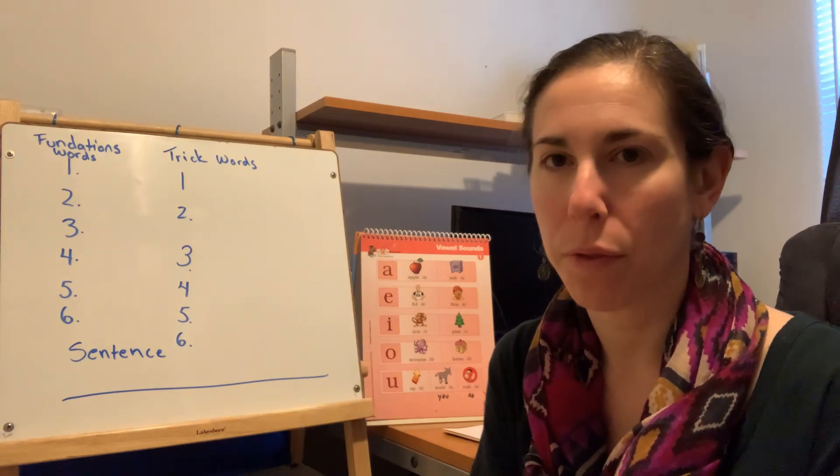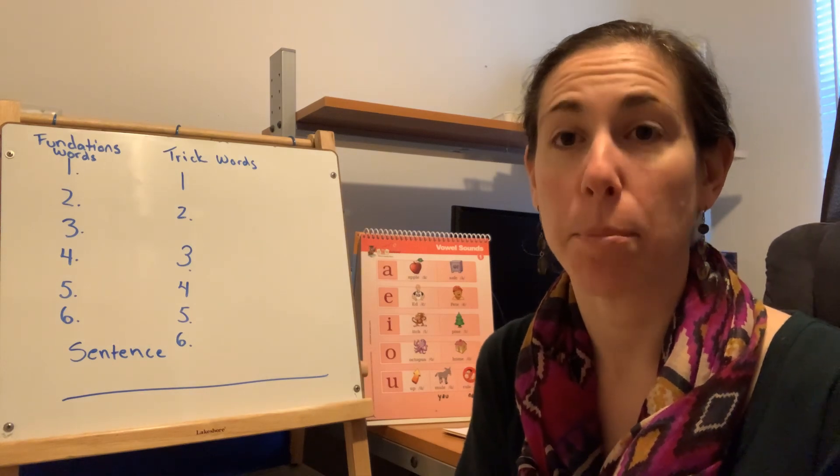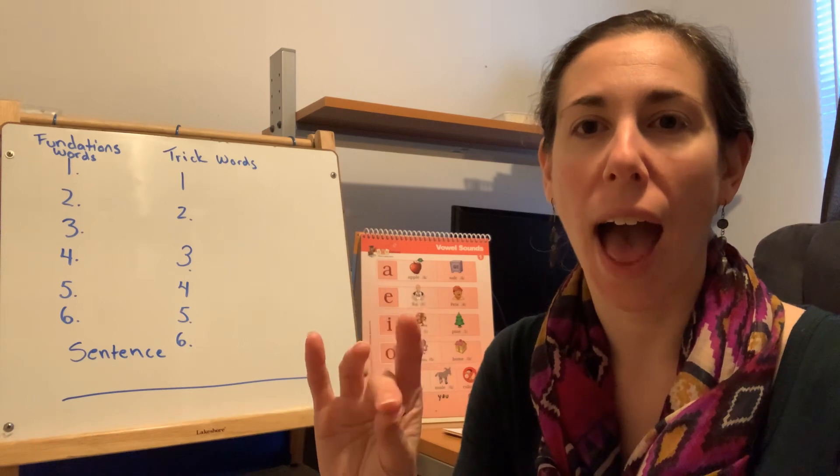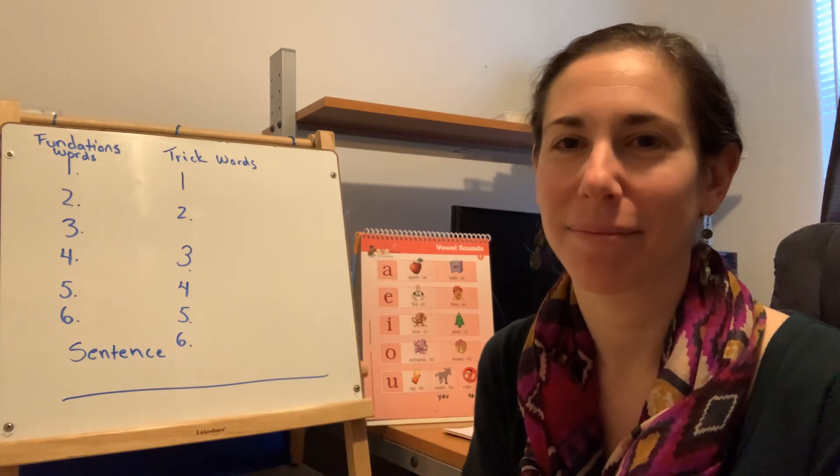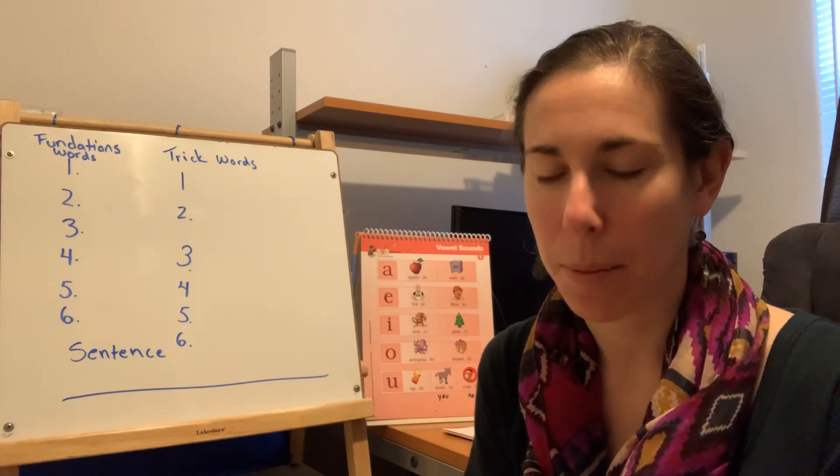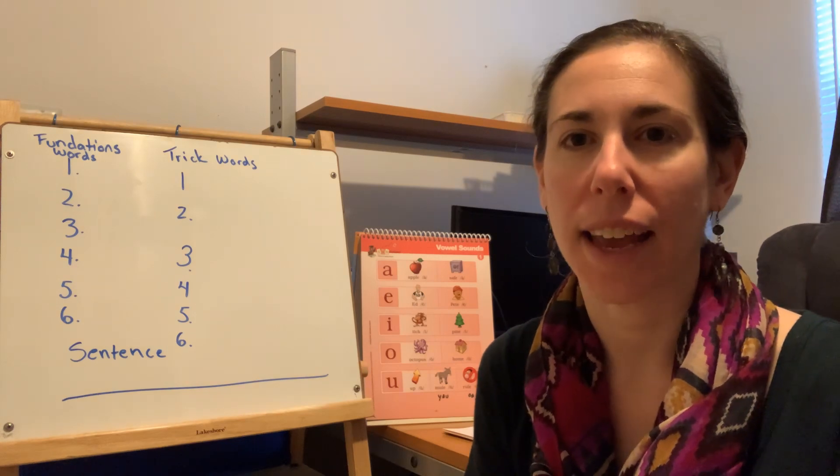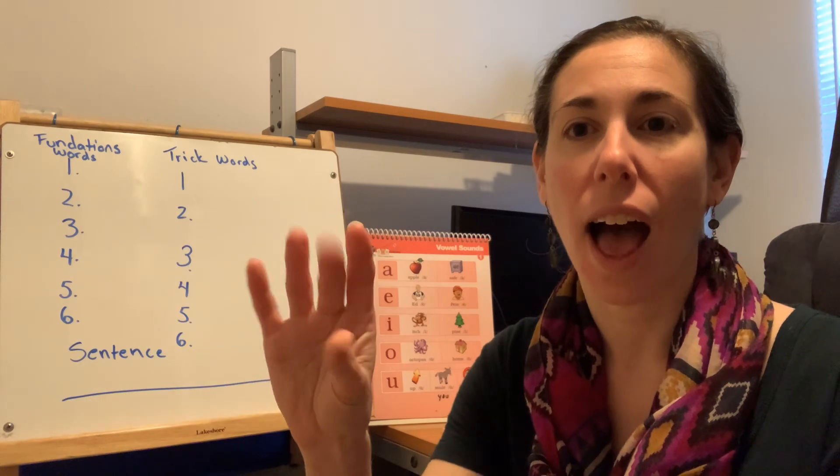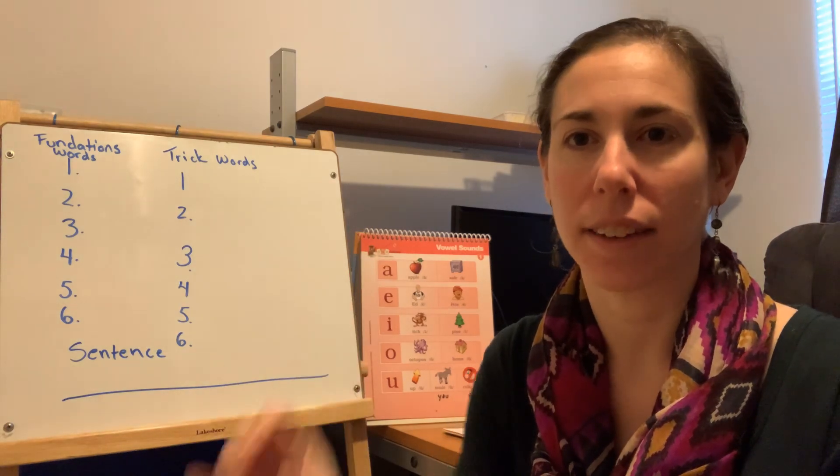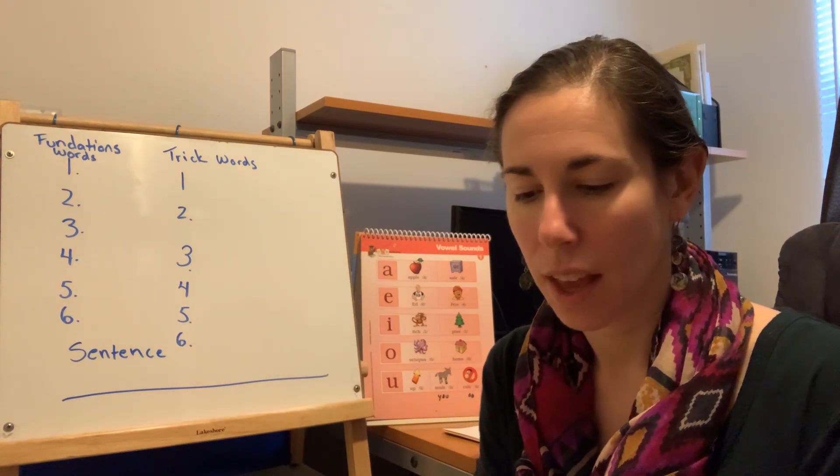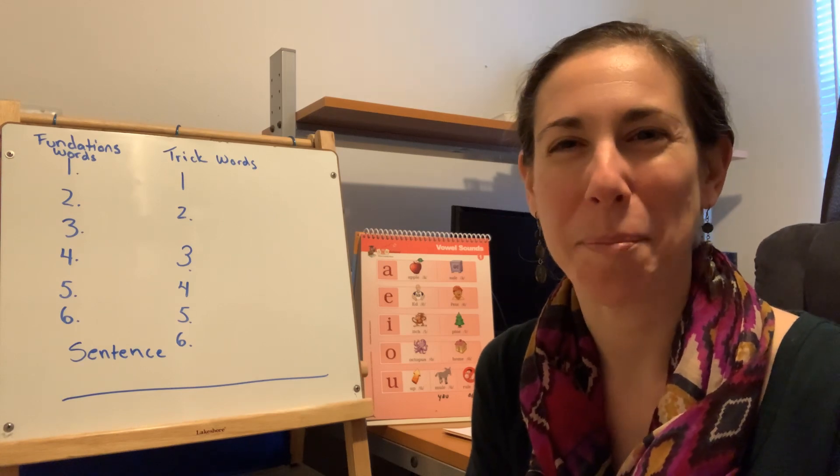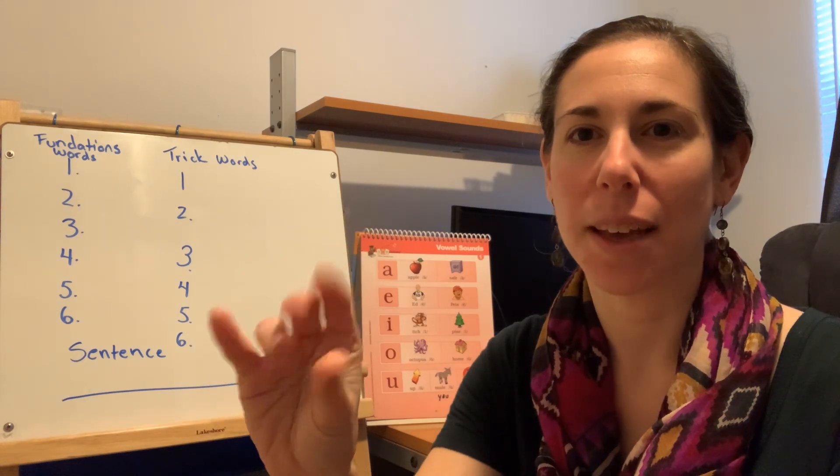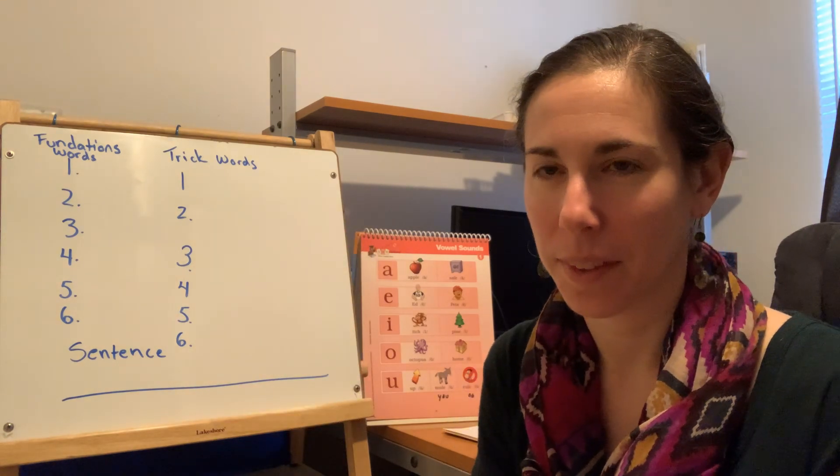Number four, bike. Say bike, tap bike, b-i-ke. Number five, line. Say line, tap line. Number six, bite. Say bite, tap bite, b-i-te. Good.